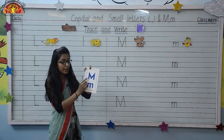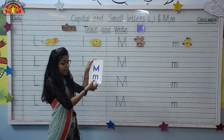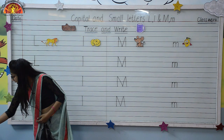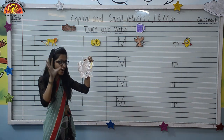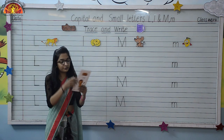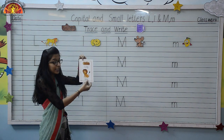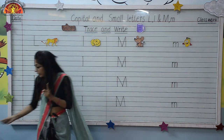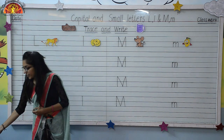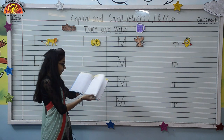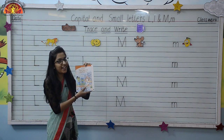M for mat, M for monkey. This is L for log, L for lion. Like this, you have to complete pages 37, 38, 40, and 41 of your Grafalco book. Till then, take care. Bye-bye everyone.